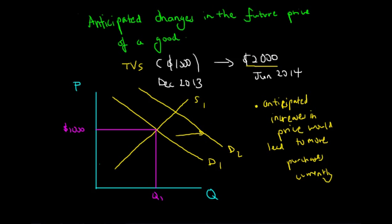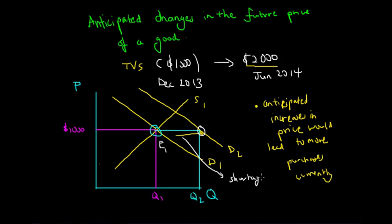Because the demand curve has shifted to the right, the corresponding quantity demanded is now at Q2, which is different from the original equilibrium at E1. Since supply at the equilibrium price is at Q1 and the new quantity demanded is at Q2, there is now a shortage of supply. The anticipated change in TV price has caused a rightward shift in the demand curve and a corresponding shortage.